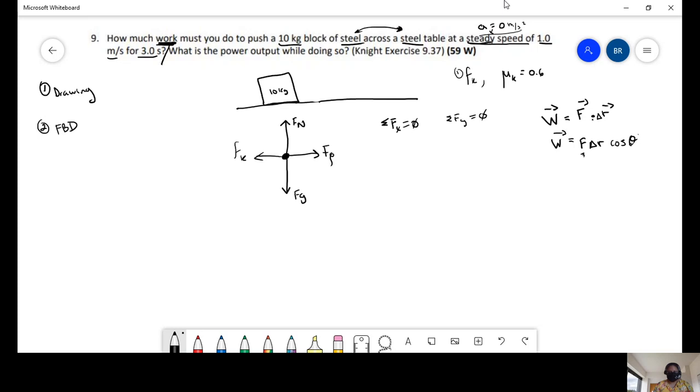The summation of forces in the x, we have force push minus force of kinetic friction equals 0. So force of push equals kinetic friction. And the same goes over here. Force normal minus force of gravity equals 0. So the force normal equals the force of gravity.